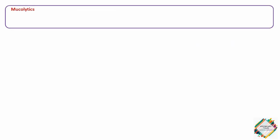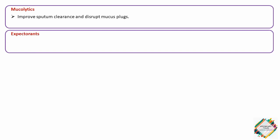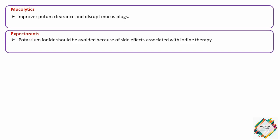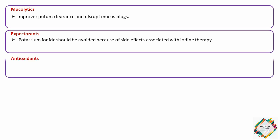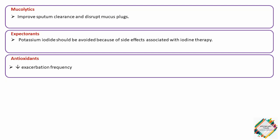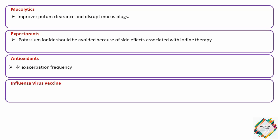Additional agents include mucolytics such as oral N-acetylcysteine, which may improve sputum clearance and disrupt mucus plugs. Expectorants such as guaifenesin may be used, while potassium iodide should be avoided due to side effects associated with iodine therapy. Antioxidants similar to oral N-acetylcysteine can reduce exacerbation frequency. Influenza virus vaccine is recommended for its ability to reduce death and serious illness by almost 50%.